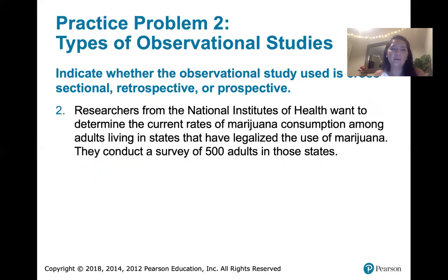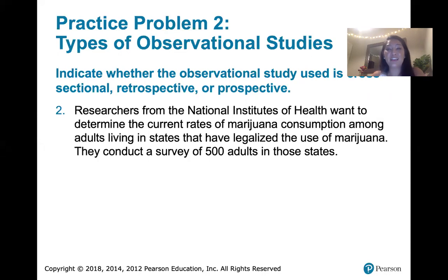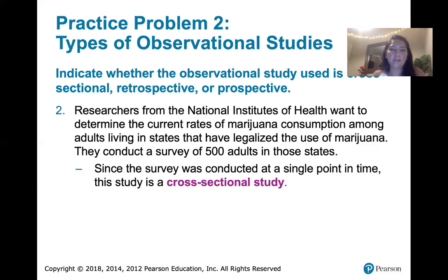In the second example, researchers from the National Institutes of Health want to determine the current rates of marijuana consumption among adults living in states that have legalized marijuana. They conduct a survey of 500 adults in those states. Since they're surveying everyone at the same time, that's cross-sectional.